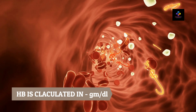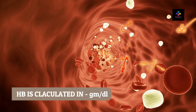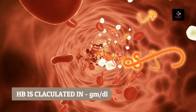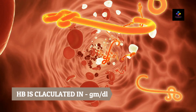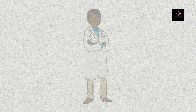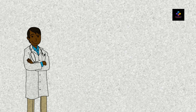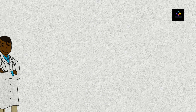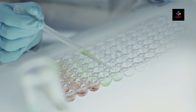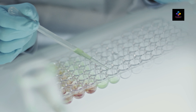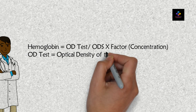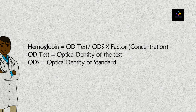Calculation: Hemoglobin in grams per deciliter is equal to optical density of test (ODT) divided by optical density of standard (ODS), multiplied by the factor.